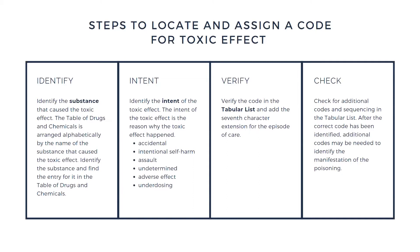Step two is to identify the intent of the toxic effect. The intent is the reason why the toxic effect happened. In the ICD-10-CM codebook, there are six different intentions that may be identified for a toxic effect code: accidental intent, intentional self-harm, assault, undetermined intent, adverse effect, and underdosing.